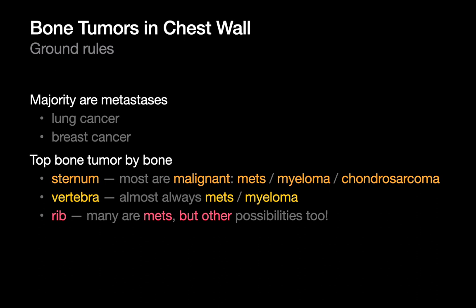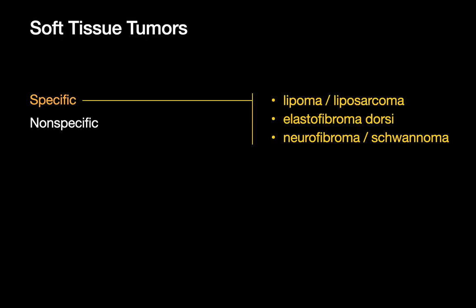Moving on to soft tissue tumors, we'll divide them into two buckets: ones that may present specifically on imaging, and ones that don't. The soft tissue tumors of the chest wall that tend to present specifically on imaging are lipomas, liposarcomas, elastofibroma dorsi, neurofibromas, and schwannomas.